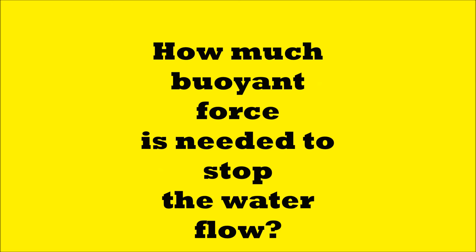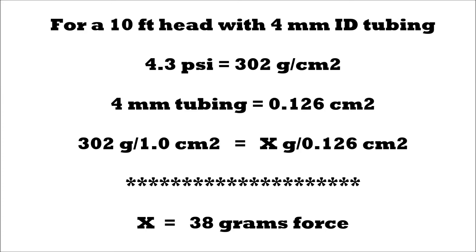How much buoyant force is needed to stop the water flow? The calculated theoretical buoyant force needed to stop water flowing from a 10 foot head in 4 millimeter inner diameter tubing is 38 grams.